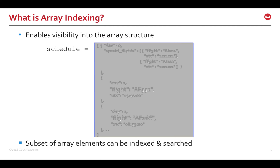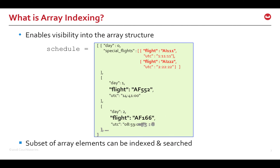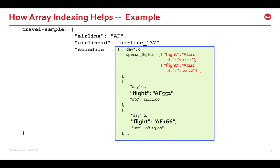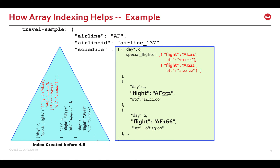Let's see how array indexing helps. First, it enables visibility into the array structure, so an index can be created on a subset of finer array elements or attributes. We can index only the required subset of the array and be efficient on index storage and search times. The benefits are a lot more effectively visible with nested arrays or objects. For example, an index created in earlier versions would index the whole array like the blue triangle, but with array indexes in 4.5, only flight attributes within the array can be indexed, which is much more efficient on storage and performance.